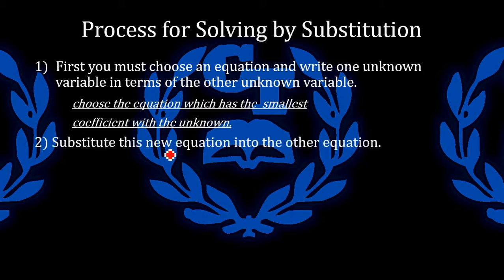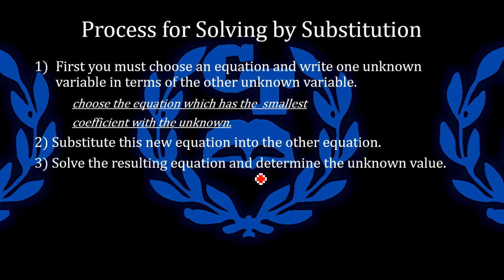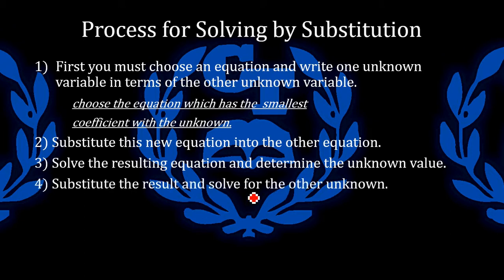So you substitute this new equation into the other equation that you didn't use. Then you solve the resulting equation and determine the unknown value. From that, you take that result and you solve for the other unknown value using the same equation that you created from step 1. Then you state your conclusion and you are finished.